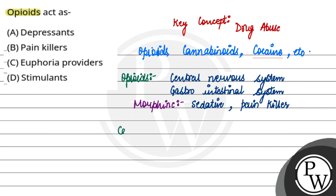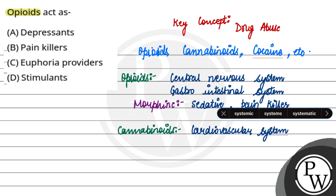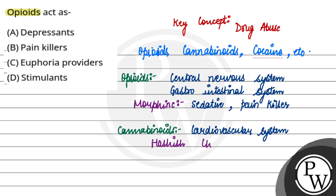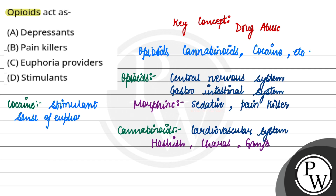We also talk about cannabinoids. This is Cannabis sativa, a plant also known as cannabis sativa. It acts as a stimulant in our body. One effect is a sense of euphoria, and it also produces hallucinations.